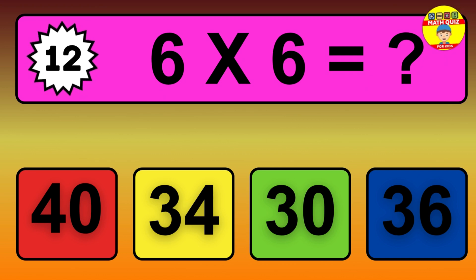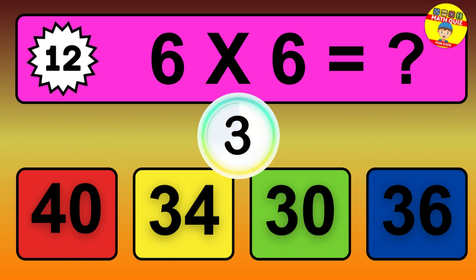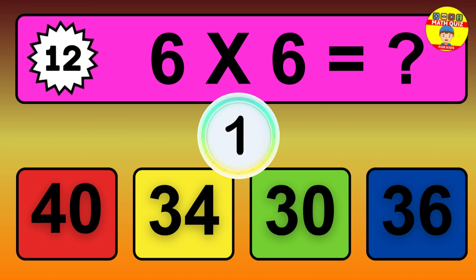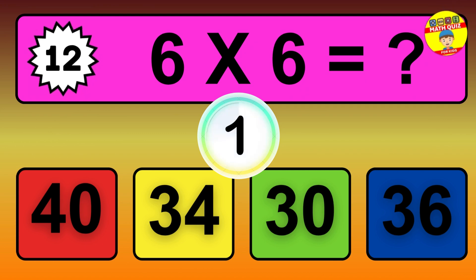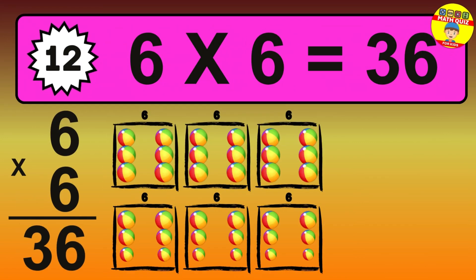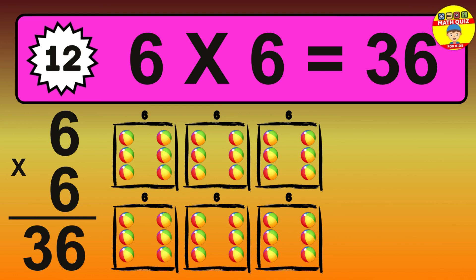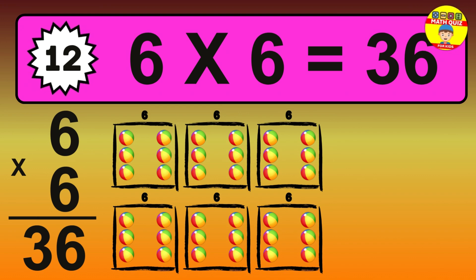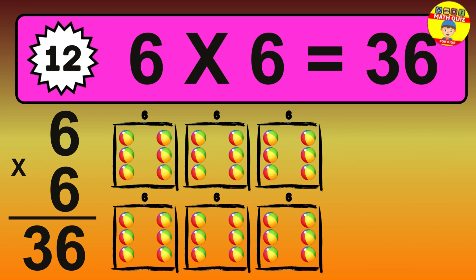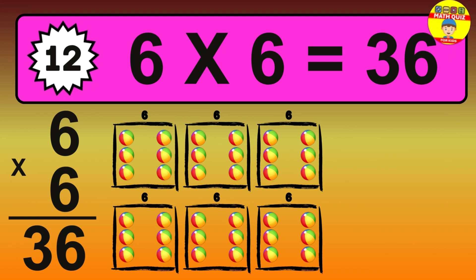Question 12. 6 times 6 equals what? The answer is 6 times 6 is 36. To calculate, we have 6 groups with 6 balls each. So how many balls do we have? 36 balls.